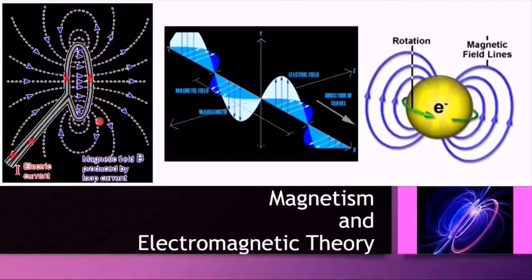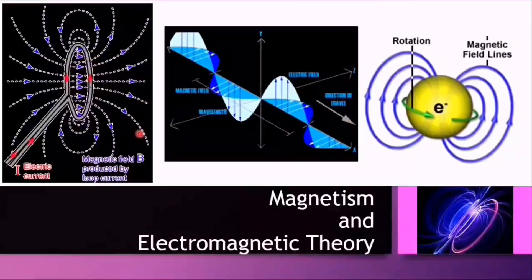Now, Maxwell was a Scottish physicist and he was one of the greatest scientists of the 19th century who formulated the theory of electromagnetism for the first time and brought together electricity, magnetism, and light as different manifestations of the same phenomena.